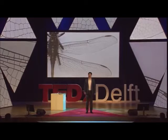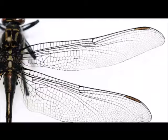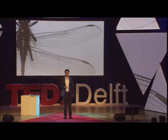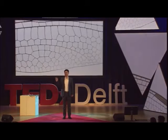Nanomaterials and nanostructures exist everywhere in our natural world. Take a look at the wing of a dragonfly. If we zoom in 100,000 times and look at the transparent membrane, we can see the nanostructures, which are invisible to the naked eye.